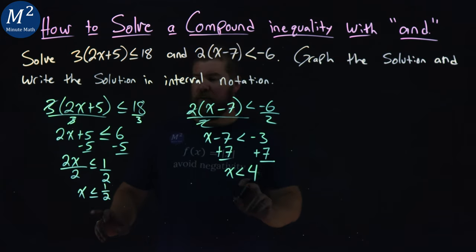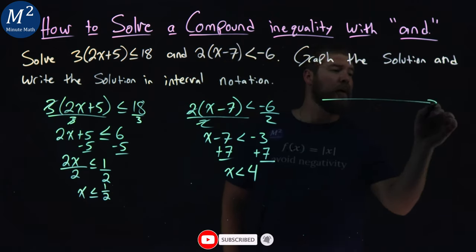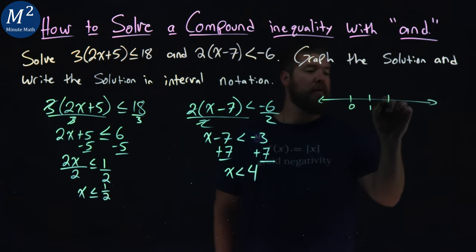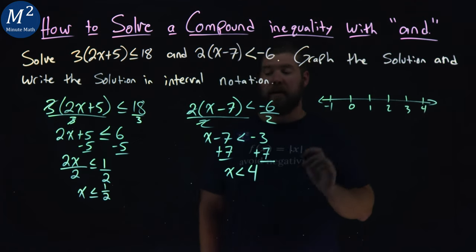So now I want to graph each one of these individually. So with that, I go over here, I'm going to have my number line right there. I have, let's put a 0 here, 1, 2, 3, 4, and then -1 right here.